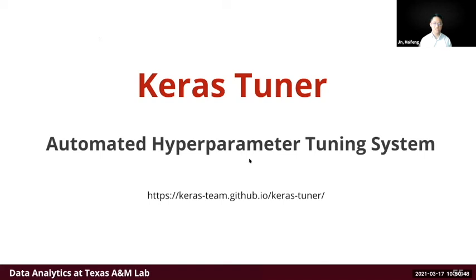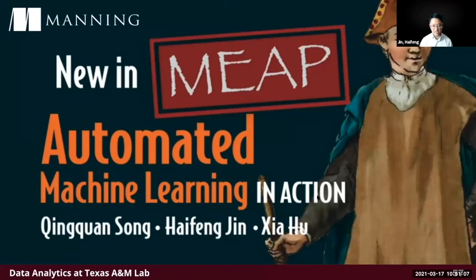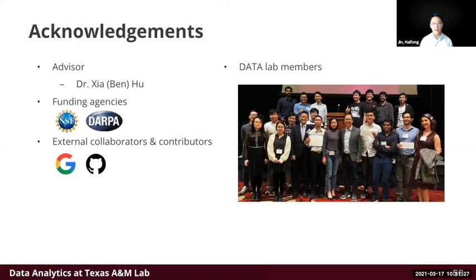Other software to check out includes KerasTuner — an automated hyperparameter tuning system for Keras — and TAS, an automated time series alignment and reaction system. We are also writing a new book called Automated Machine Learning in Action, now in early access with the first three chapters available, written in collaboration with many contributors. Finally, thank you to my advisor, funding agencies NSF and DARPA, external contributors from Google and GitHub, and all lab members.